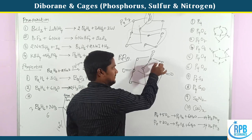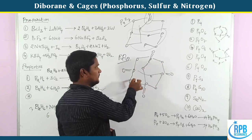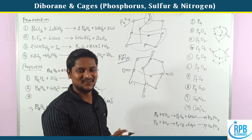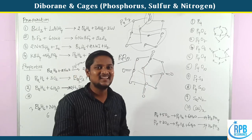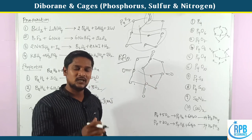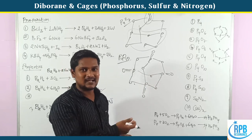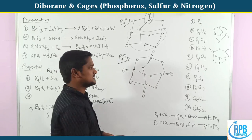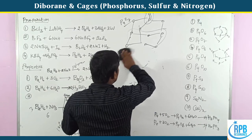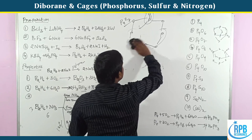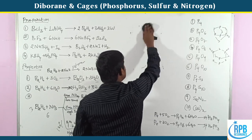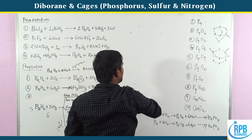In P4O10, counting the P-O-P (bridging) bonds: there are 6 bridging P-O-P bands. So 6 P-O-P bands are present in P4O10. This is a previous CSIR question about counting the number and types of bonds in P4O10.